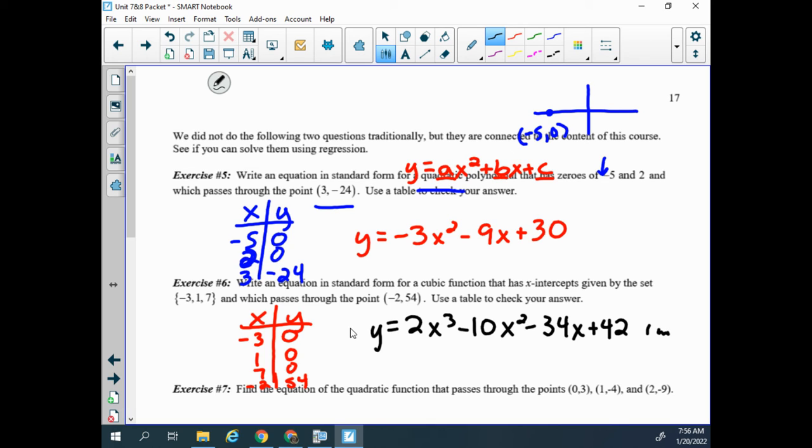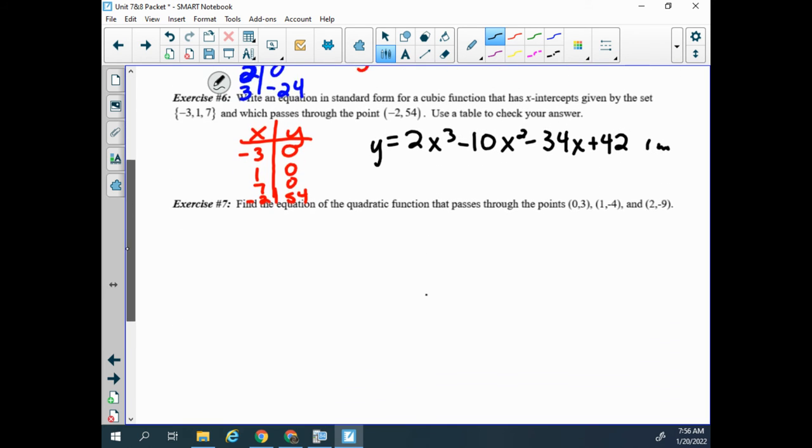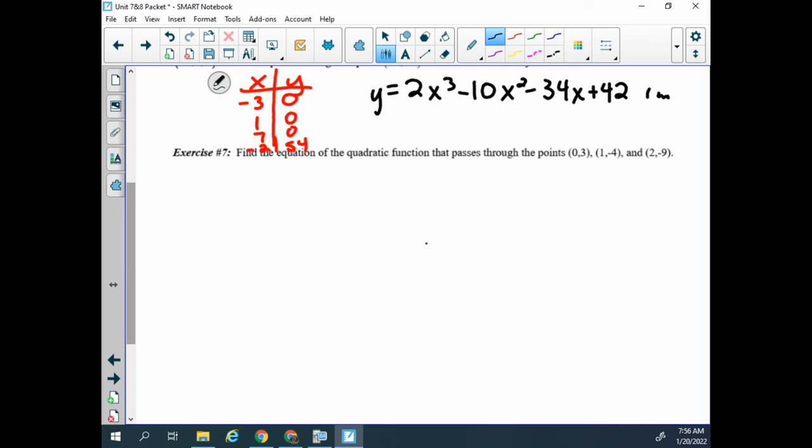So we have one more problem here, quite similar. It says find the equation of a quadratic, so we're going back to quadratic regression's function that passes through these three points. So we definitely didn't do something like this, but I have three points. None of them are zeros. But I'm going to set them up in a table, and then go from there. I do notice one of them, (0, 3), is the y-intercept, but that doesn't really make a difference. It doesn't need to be the y-intercept. This would still work as long as I have three points.